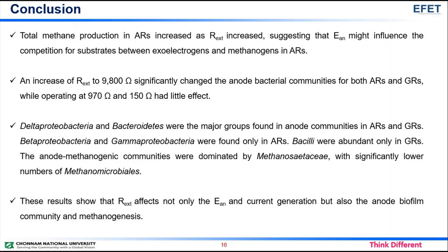Deltaproteobacteria and Bacteroidetes were the major groups found in anode communities in both acetate-fed and glucose-fed reactors. Betaproteobacteria and Gammaproteobacteria were found only in acetate-fed reactors. Bacilli were abundant only in glucose-fed reactors. The anode methanogenic communities were dominated by Methanosaetaceae, with significantly lower numbers of Methanomicrobiales. These results show that external resistance affects not only the anode potential and current generation, but also the anode biofilm community and methanogenesis.